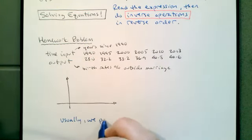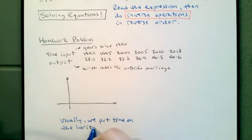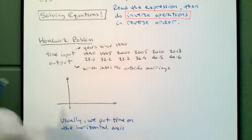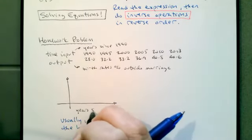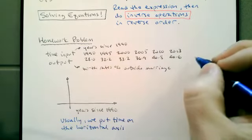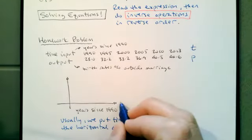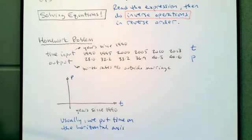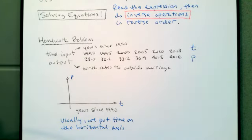Usually we put time on the horizontal axis. So that's why I want to put down here years since 1990 on our horizontal axis. The problem says let P be the percentage of births. So P at T years since 1990. So this is going to be where we put T, and then our vertical axis will be P. The vertical axis is going to be percentage of births outside marriage.